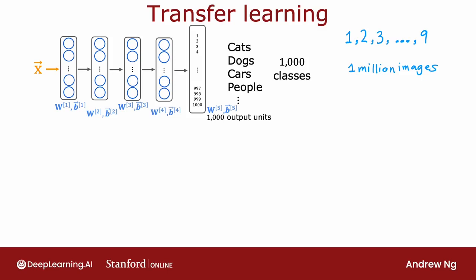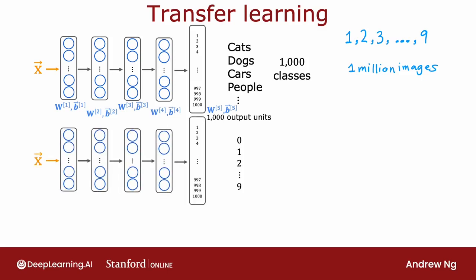To apply transfer learning, what you do is then make a copy of this neural network where you would keep the parameters W1B1, W2B2, W3B3, and W4B4. But for the last layer, you would eliminate the output layer and replace it with a much smaller output layer with just 10 rather than 1,000 output units. And these 10 output units will correspond to the classes 0, 1 through 9 that you want your neural network to recognize.